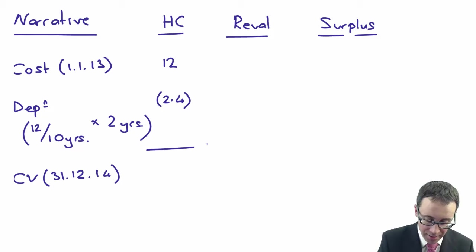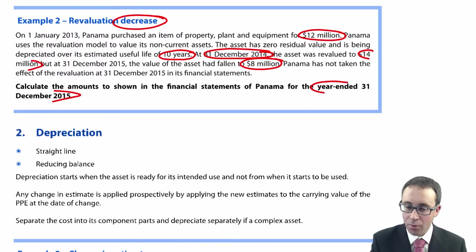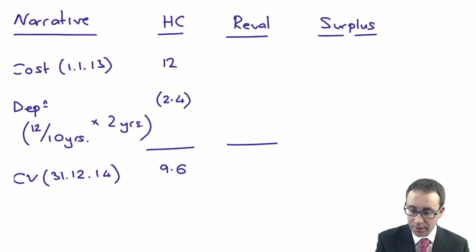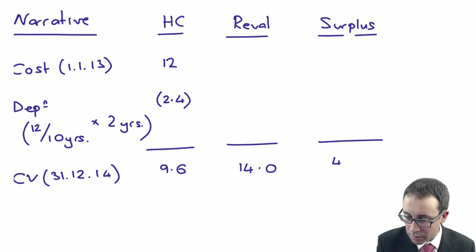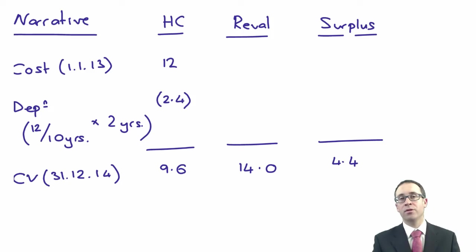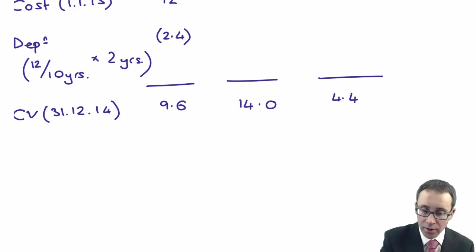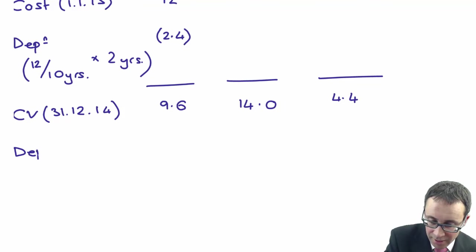12 divided by 10 is 1.2 multiplied by 2 is 2.4, which gives me a carrying value of 9.6. The revalued amount at 2014 was 14 million, so we can put in the 14. 14 less 9.6 gives a surplus of 4.4. That would be the revaluation gain that in 2014 would have gone to your other comprehensive income.